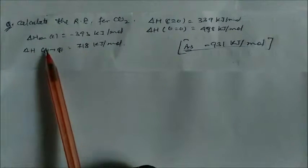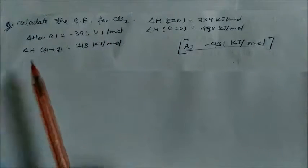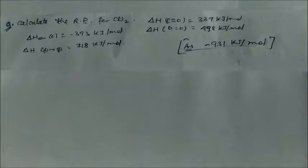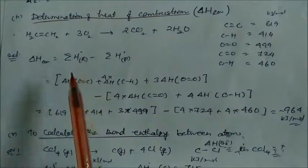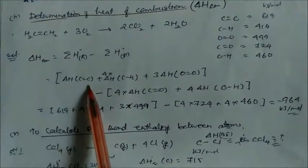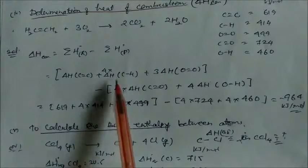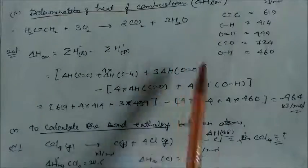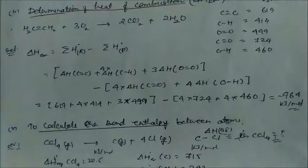A practice problem: calculate resonance energy of CO₂ using given heat of atomization of carbon (718 kJ/mol), heat of combustion of CO₂ (−393 kJ/mol), and bond enthalpies of C=O and O=O. For heat of combustion of ethane with O₂ → CO₂ + H₂O: ΔH = reactant bond enthalpies (C–C, 4 C–H, O=O) minus product bond enthalpies (2 × 2 C=O in CO₂ + 2 × 2 O–H in H₂O). Solving gives −64 kJ/mol.